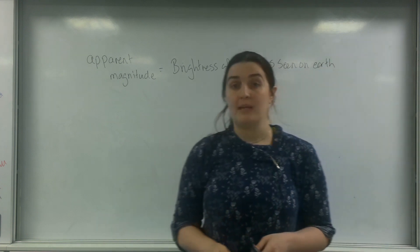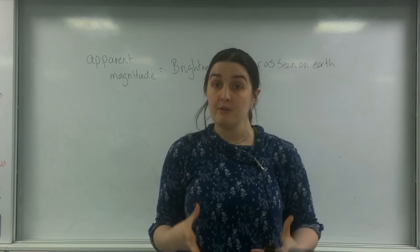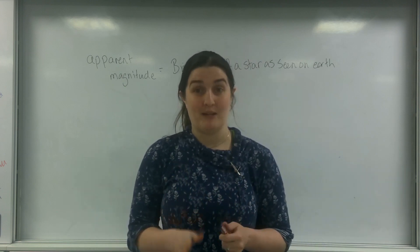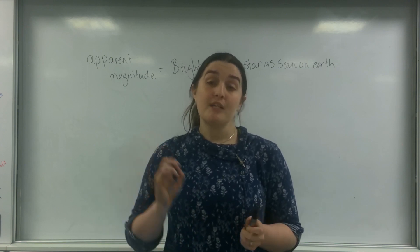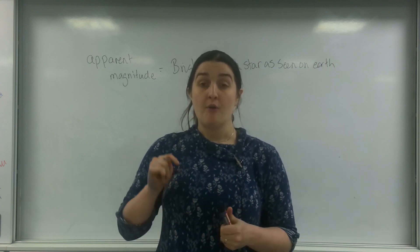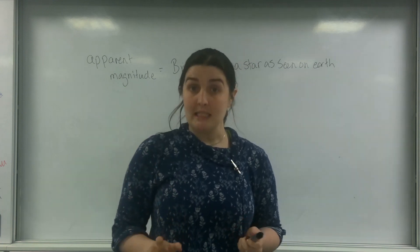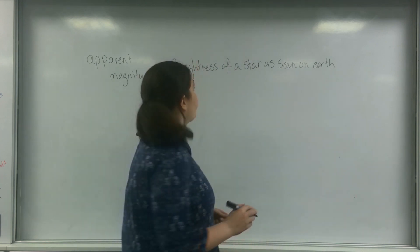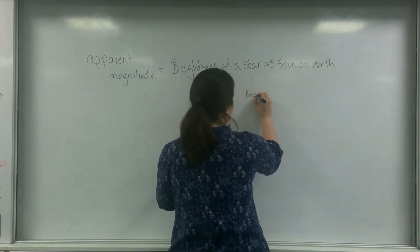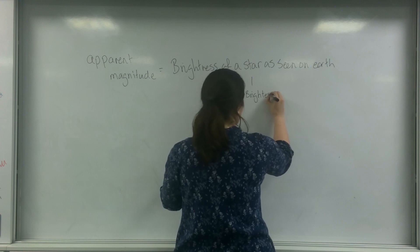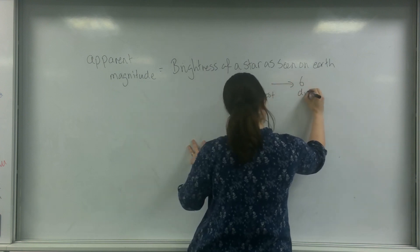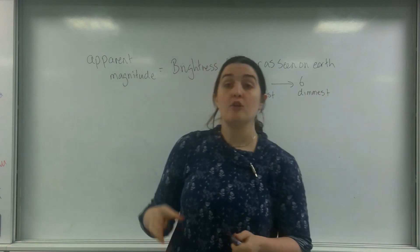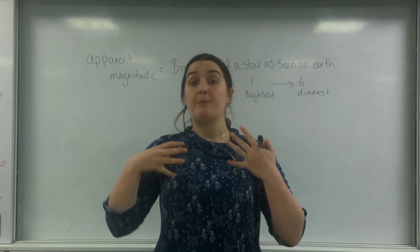Where this has come from is a Greek astronomer called Hipparchus — there are lots of ways of pronouncing his name, and I do apologise if I pronounced it wrong. He was a Greek astronomer that labelled the stars in the sky from one being the brightest to six being the dimmest. So the closer to zero it is, the brighter it is.